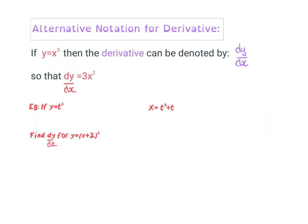We saw that you could write the derivative as f'(x). It can also be written in a different way — it can be denoted as dy/dx. So that's just another way of writing that. So dy/dx equals 3x squared — we know that's the derivative of this. Say if you said y equals x cubed, from what we did before it would be 3 times x and reduce the power, so we can write it like that.